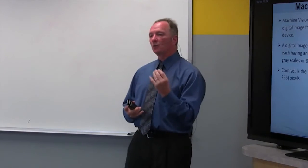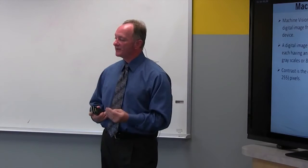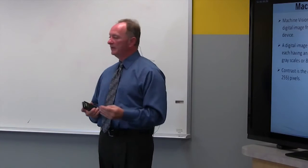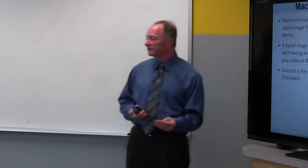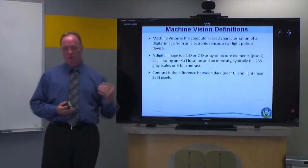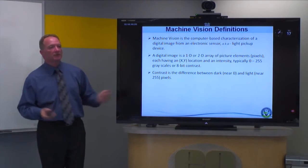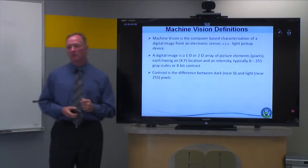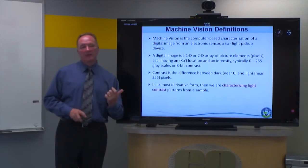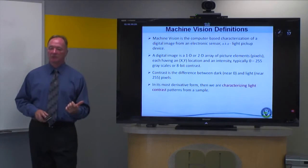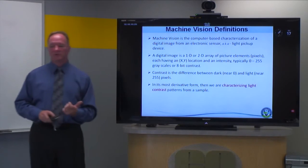What we define as contrast is just that difference between dark — near-zero intensity — to near bright, or 255 intensity in the case of an 8-bit image, which is fairly typical for vision cameras. In its most derivative form, really what we're doing is characterizing light contrast patterns from a sample.